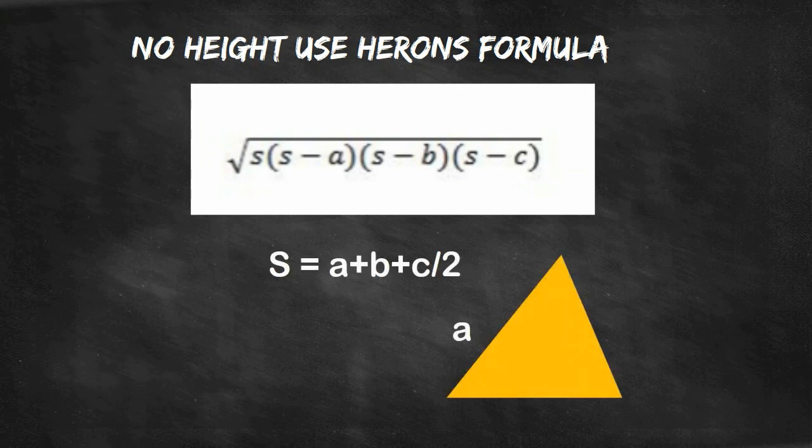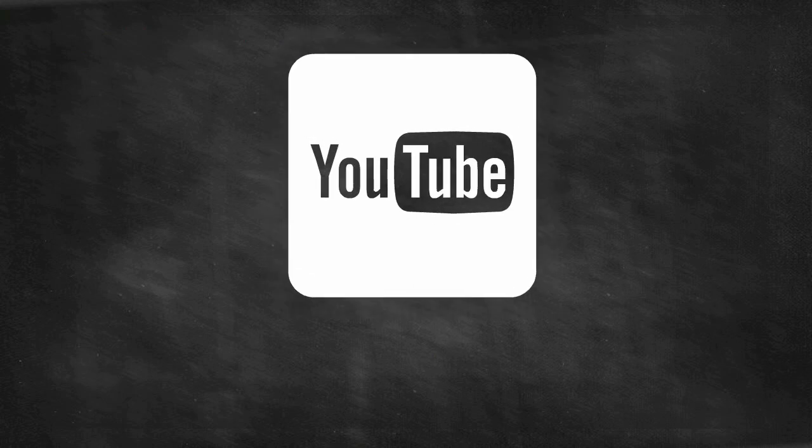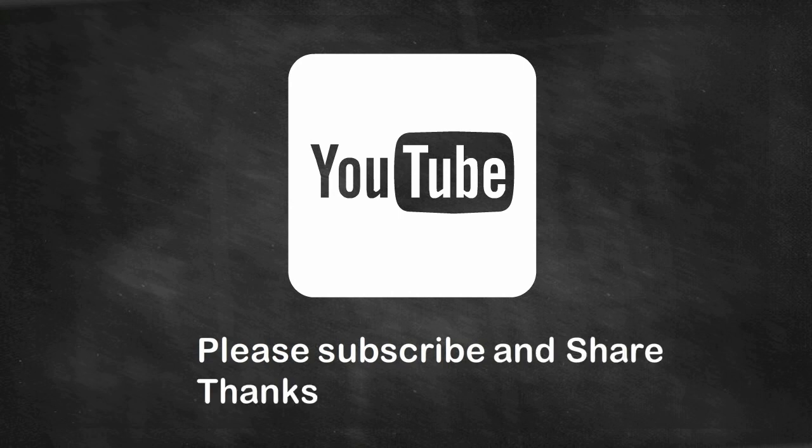And s is a plus b plus c divided by 2. The perimeter of a triangle is equal to a plus b plus c. Hope these formulas help. MooMooMath uploads a new math video every day. Please subscribe or share. Thanks for watching.